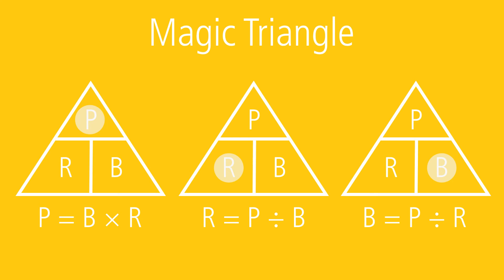To solve business situations in which the whole or total amount is unknown, we use the formula B equals P divided by R.